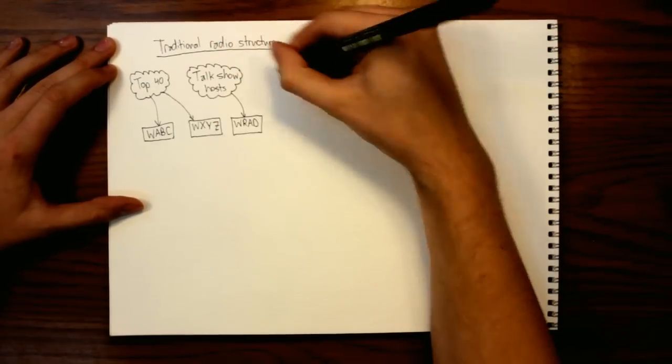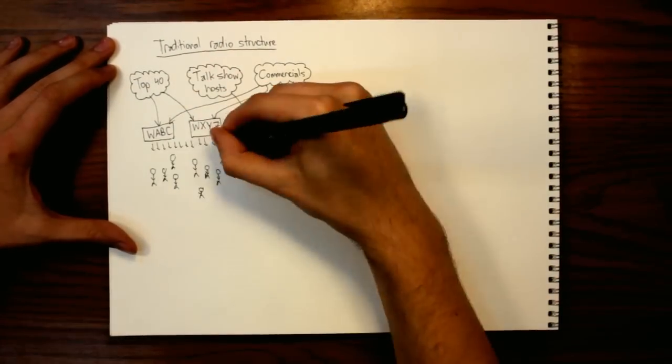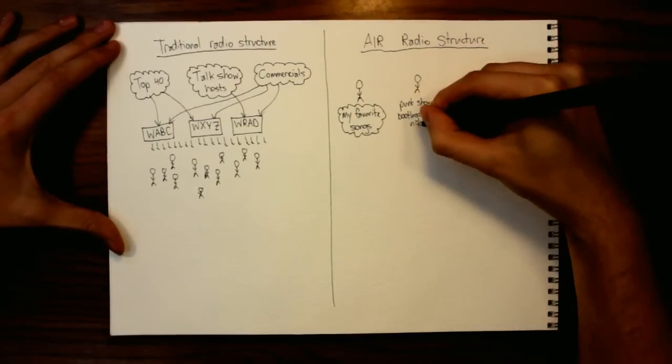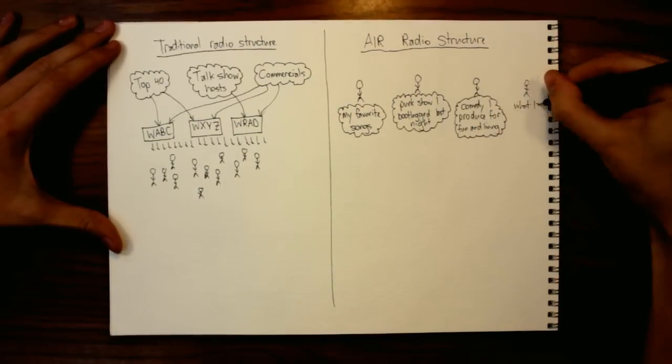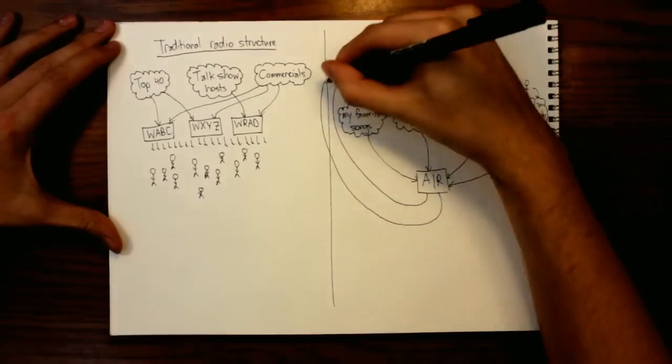AIR flips the traditional top-down power structures of radio to create a platform that gives underserved groups access to the airwaves. It takes ideas of public space and applies it to the radio spectrum.